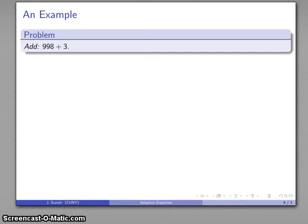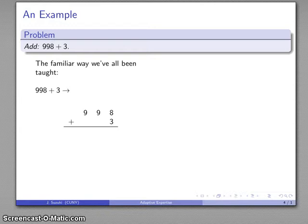As an example, add 998 plus 3. Here's the familiar way we've all been taught. First, I have to rewrite the problem in column format. Then I do this complicated thing: 8 plus 3 is 11, write 1 carry 1. 9 plus 1 is 10, write 0 carry 1. 1 plus 9 is 10, write 0 carry 1. There's my sum after about 12 steps. This is the familiar standard method.